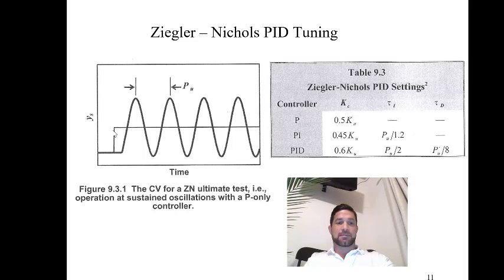So this plot right here shows a step input change, and then the process response achieves sustained oscillations. And once you have the sustained oscillations, you can calculate the ultimate period, which is the distance between two peaks.